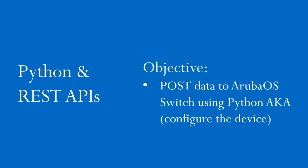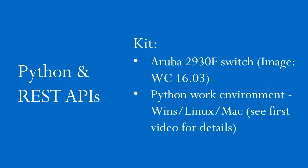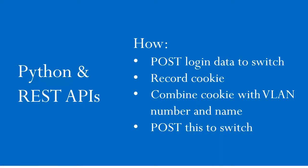You may be asking why we'd want to do this — it's a programmatic approach to network management, and I did cover this in my last video, so please see that for a more serious explanation. The kit is as before: it's an Aruba 2930F and I've got my Python work environment here, the same as from video two.